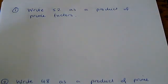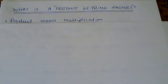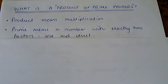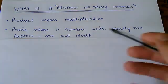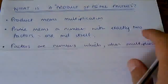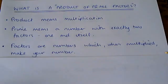In this video, we're going to look at how you can write a number as a product of prime factors. In order to be able to do that, you need to know what a product of prime factors is. A product means that you're going to write the number as a multiplication. The word prime means that you're going to write it as a multiplication of prime numbers, and prime numbers are those with exactly two factors. Factors are numbers which, when you multiply them, make your number. So it's really saying we're going to write a multiplication using prime numbers which equals the number that you are given.